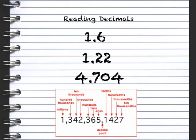Last one, 4.704. Well, I know that's 4 and 704. Let's see where the 4 is. It lands in the thousandths place. So, I read this number as 4 and 704 thousandths.